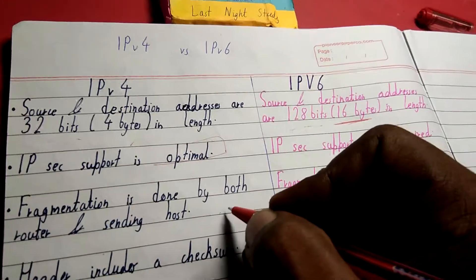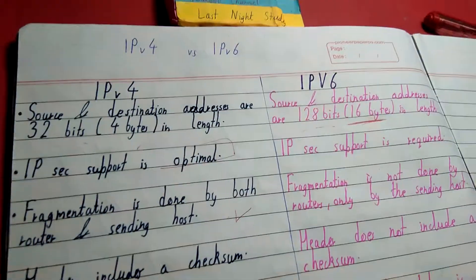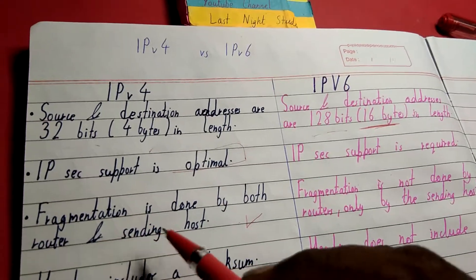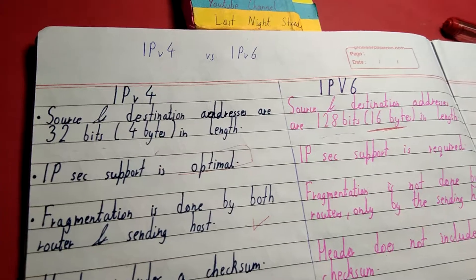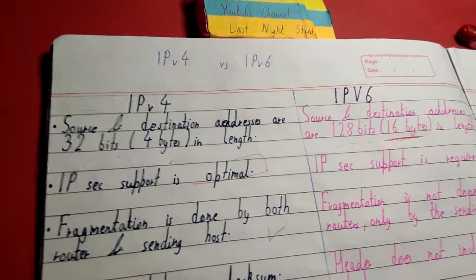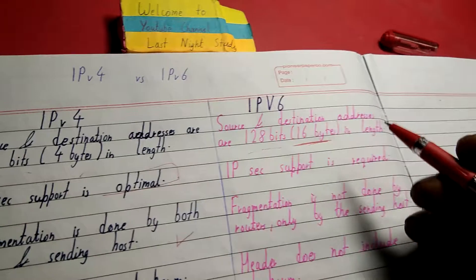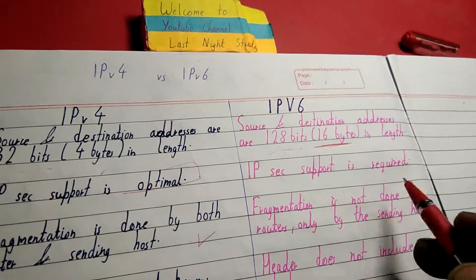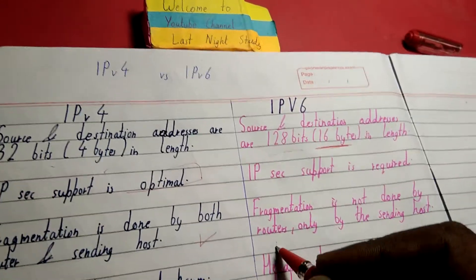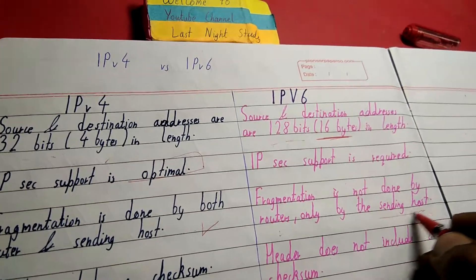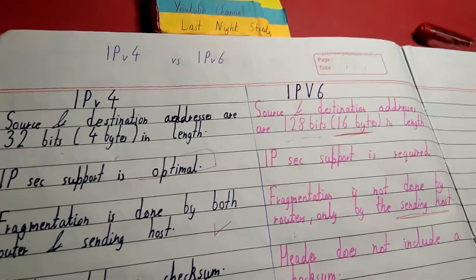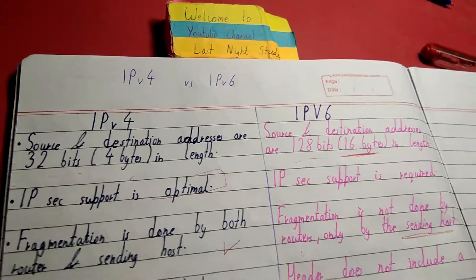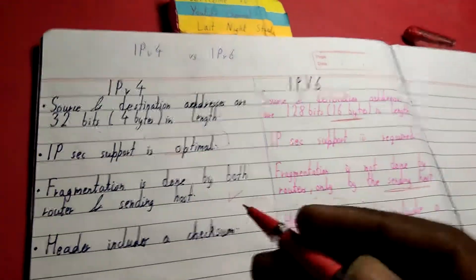In IPv4, fragmentation is done by both the router as well as the sending host. This uses more computation and causes delays. In IPv6, which is the advanced version, fragmentation is only done by the sending host and not by routers. This results in less delay, less computation, and faster services.